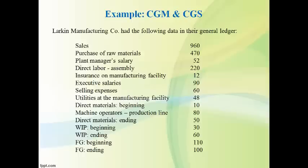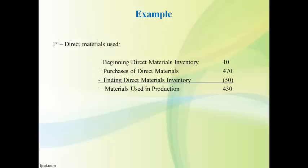The company's costs are listed in the general ledger. Review this list and note which costs are product costs and which are period costs. Only product costs and inventory balances are used to compute cost of goods manufactured and cost of goods sold — period costs are not included. The first step is to compute direct materials used: consider the change in inventory and the purchases this period to compute the amount of direct materials used during the period.